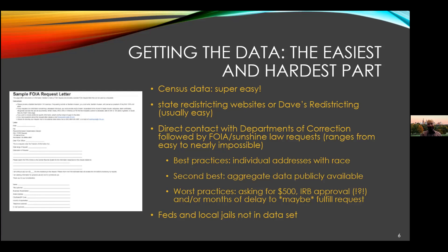Other times it can be very difficult. The best practice is when we got those individual addresses and we got the race and ethnicity of people. The second best — which is the most common — is that we don't get a specific address for each incarcerated individual, but rather we get a total count by home county or committing county. One thing we know is that about 85 to 90% of people who are committed to a state facility by a county also reside in that county. So that is a best estimate. That's often publicly available from some states.